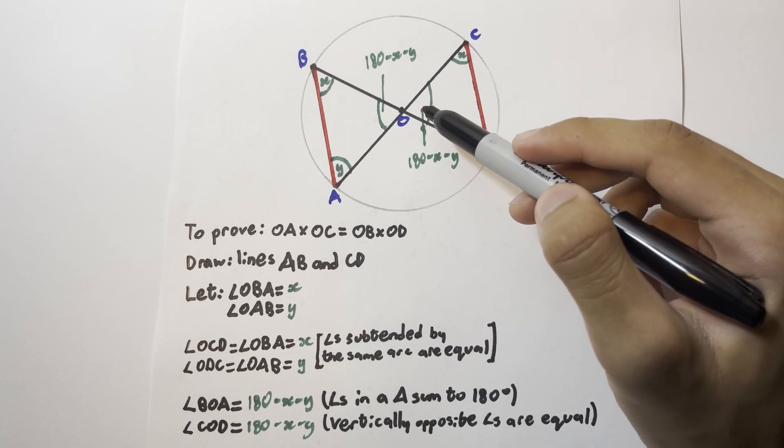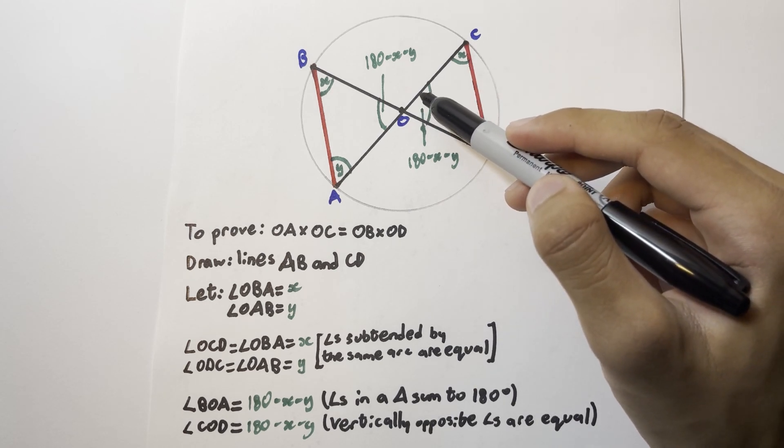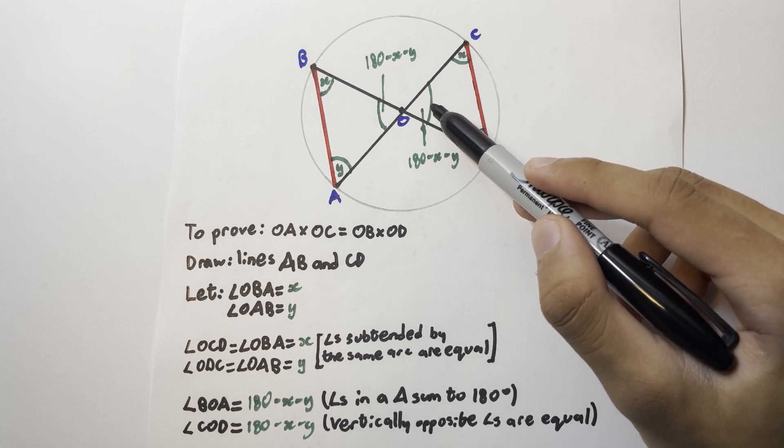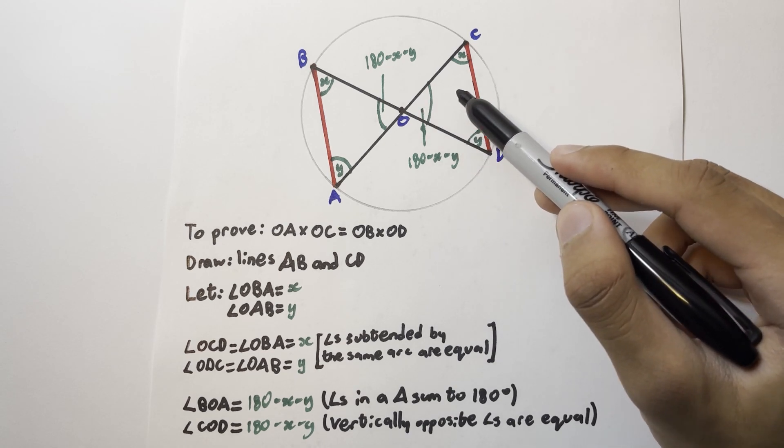Because vertically opposite angles are equal, we can also work out that angle COD is the same, 180 minus x minus y. We can also work this out by using the same property of angles in the triangle summing to 180 degrees.